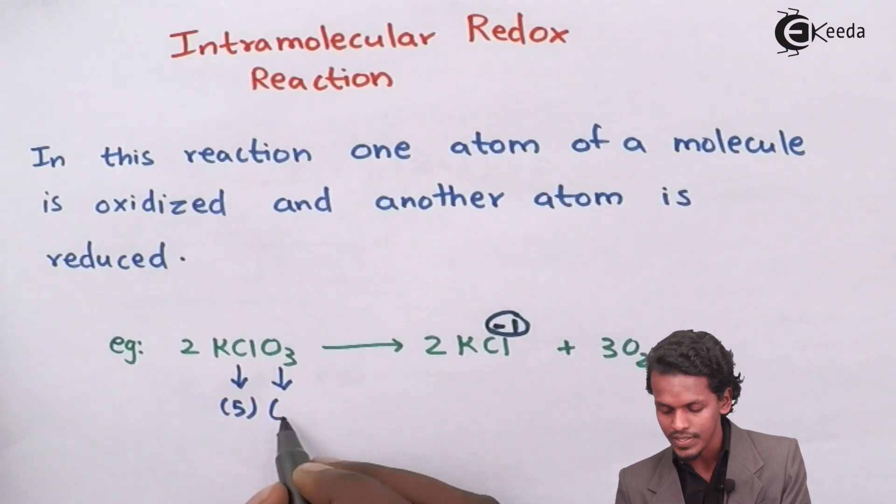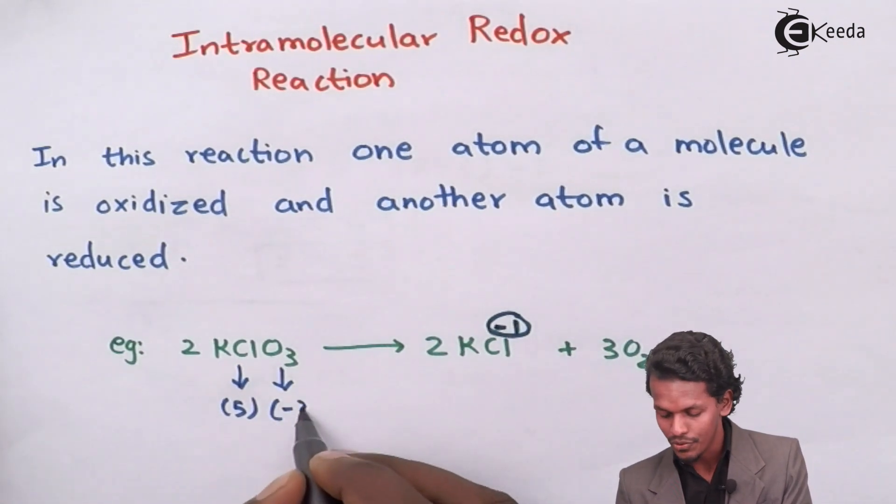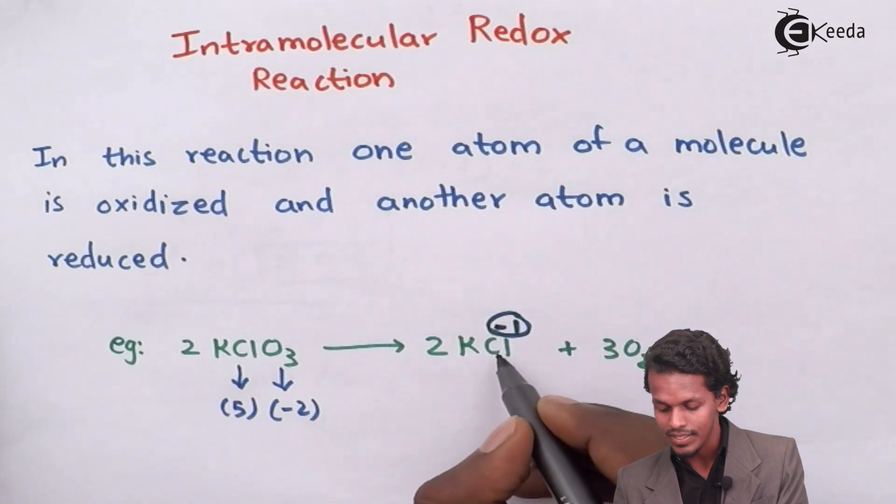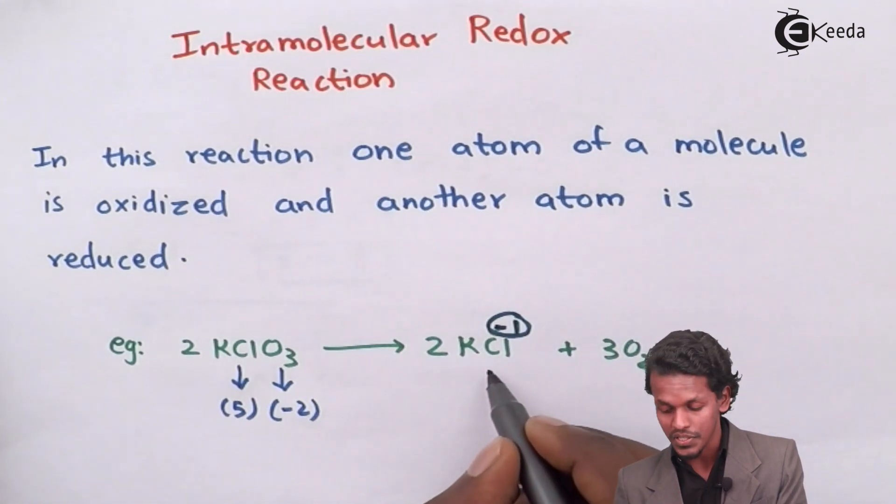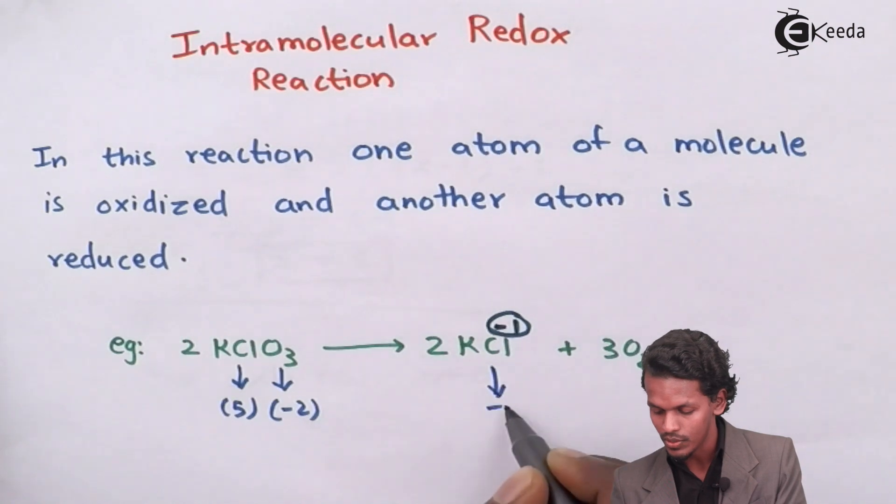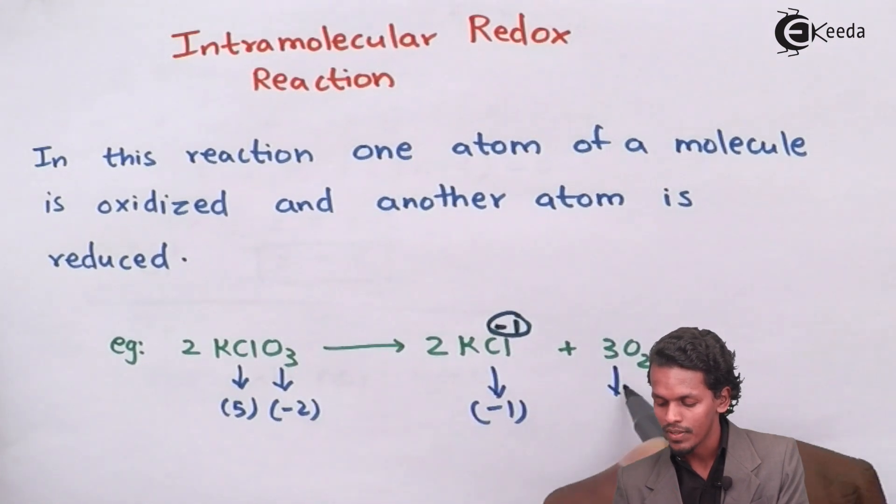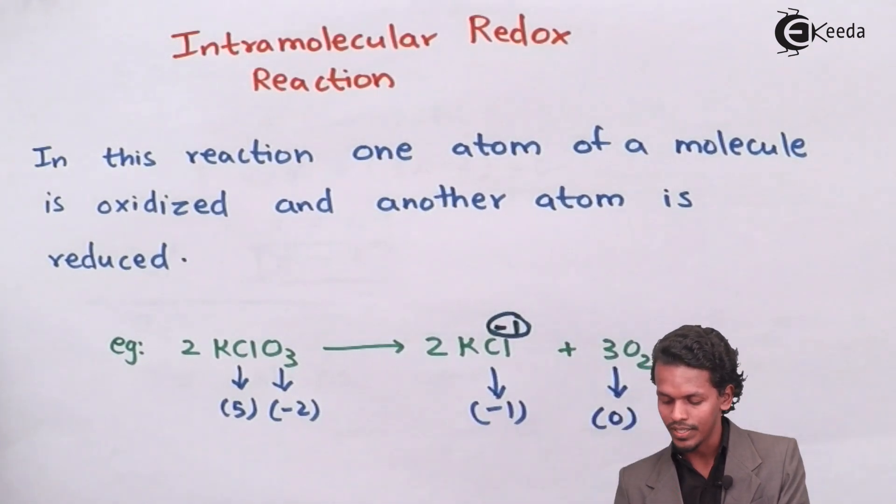minus 2. While in the product, the oxidation number of Cl is minus 1, and the oxidation number of oxygen is 0 in this case.